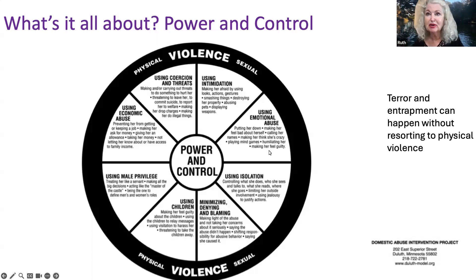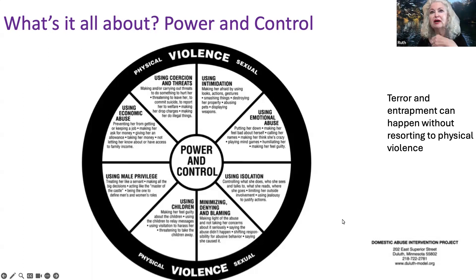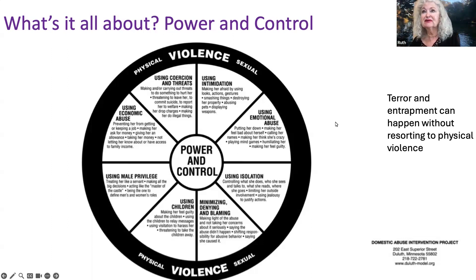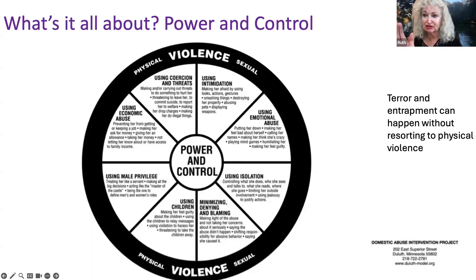So this is the inner part of the power and control wheel, and you see the circumference of it. At a Kaiser appointment, I saw a poster showing the inner section of the wheel without the physical and sexual violence portions — drawing patients' attention to the fact that you can do a lot of damage to an intimate partner without ever laying a hand on them. But let's not forget that physical and sexual violence are also part of domestic violence.